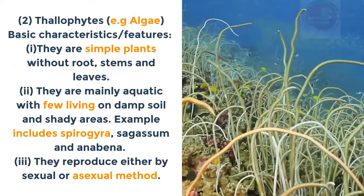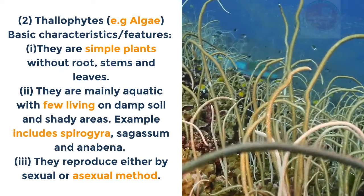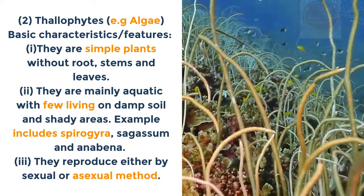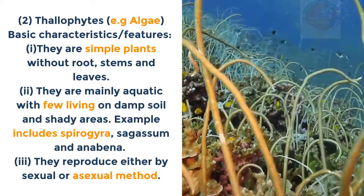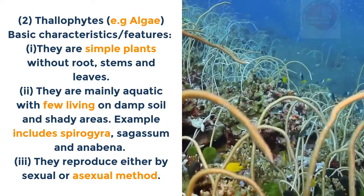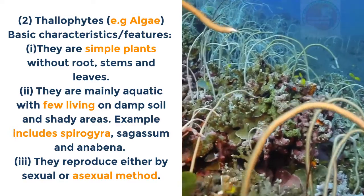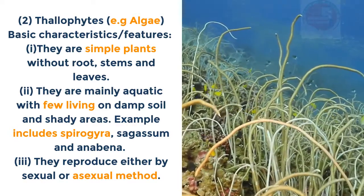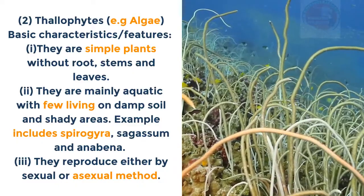Thallophyta, e.g. algae — basic characteristics: i. They are simple plants without roots, stems and leaves. ii. They are mainly aquatic with few living on damp soil and shady areas. Examples include Spirogyra, Sagacum and Anabaena. iii. They reproduce by either bisexual or asexual methods.